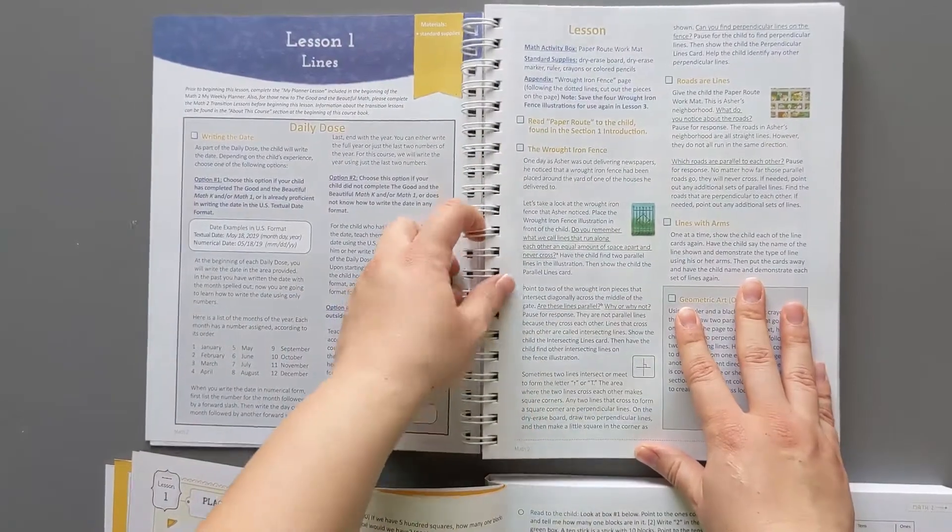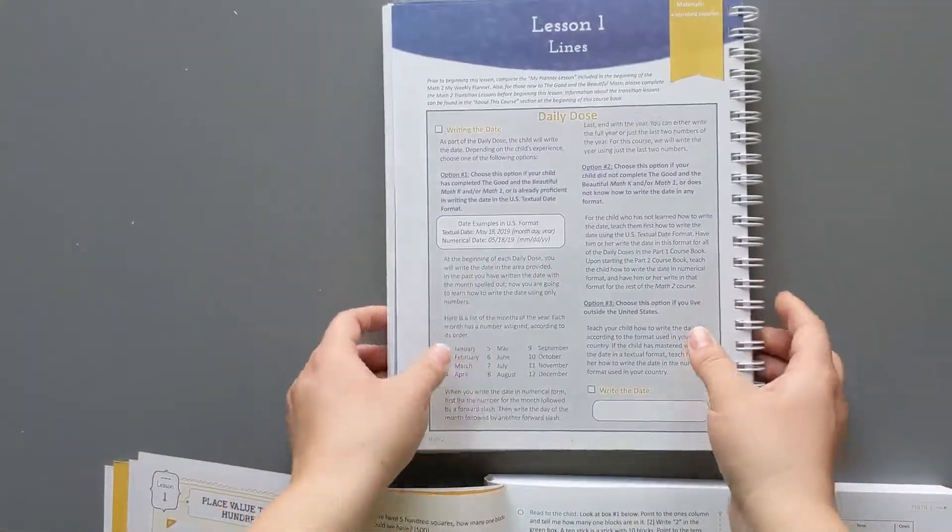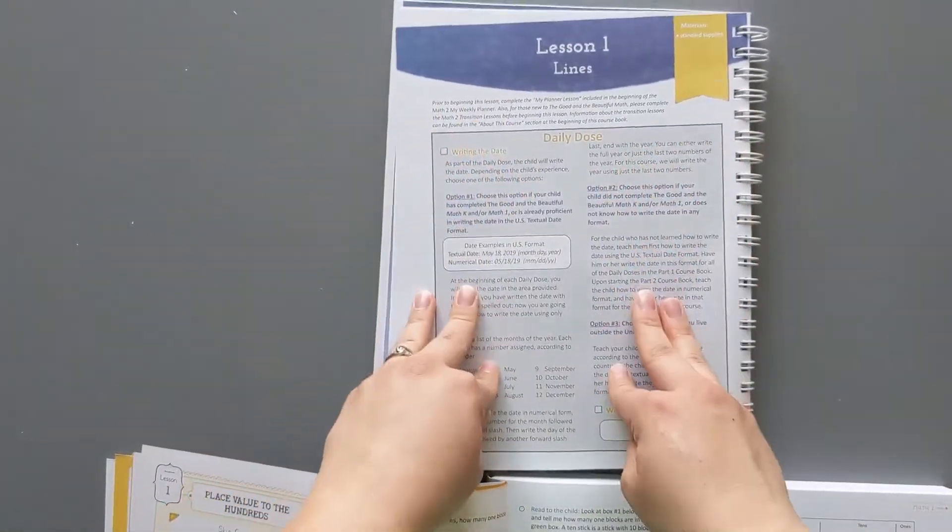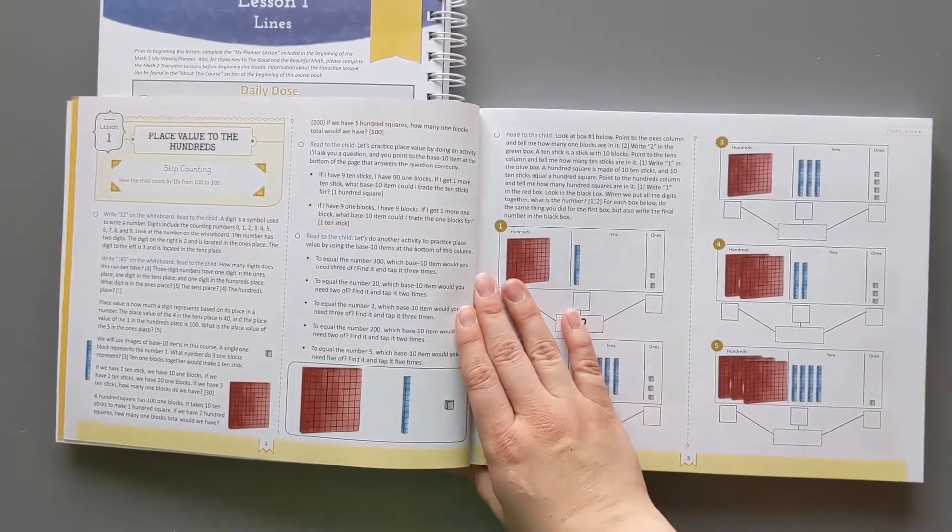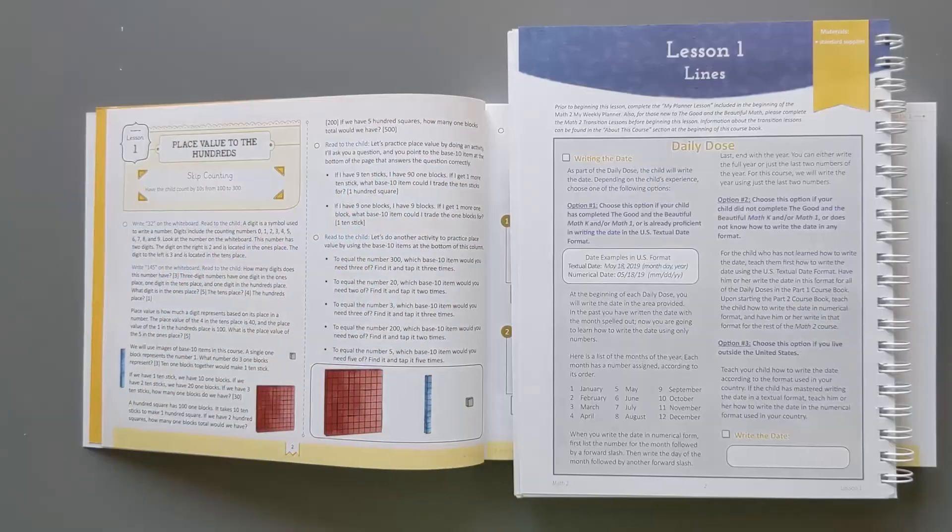So what I love about the spiral bind is that we can easily flip it over and focus on what we're looking at. With this lay flat version you get to see it all right there.